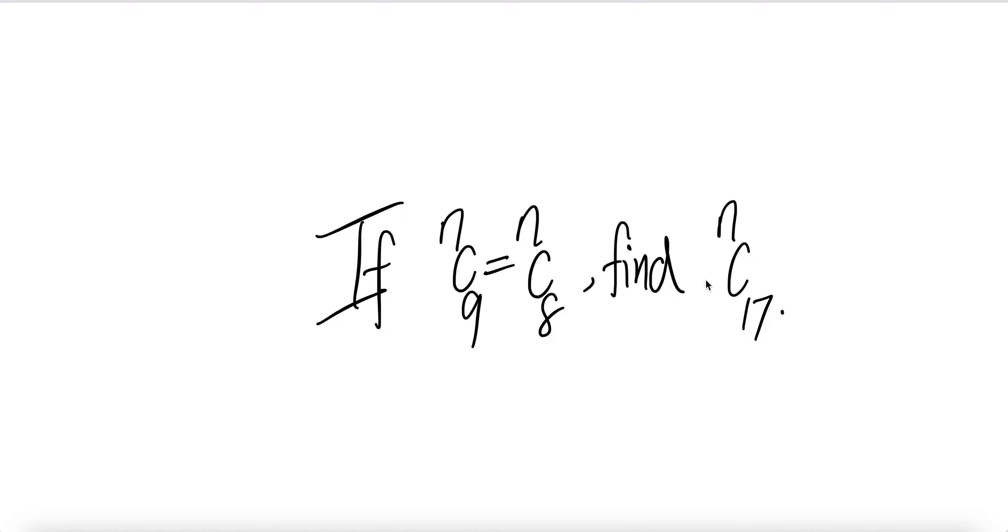In order to find n choose 17, we need to know n. And we are given that n choose 9 is equal to n choose 8. So from here, we're going to get n.